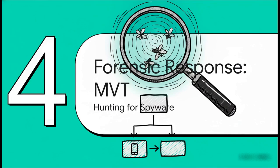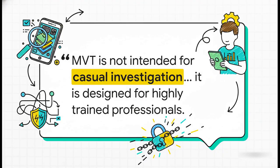Let's pivot to the defensive side — forensic response, specifically hunting with MVT for sophisticated spyware. When you suspect a really low-level compromise, think something on the level of Pegasus, your typical consumer-grade tools just aren't going to cut it. That's where the Mobile Verification Toolkit, MVT, comes in — the professional's framework for hunting down advanced indicators of compromise. MVT is not a tool for casual investigation. It's a complex forensic framework designed for highly trained professionals, because interpreting its findings requires a deep, nuanced understanding of mobile forensics to avoid false positives or corrupting evidence.